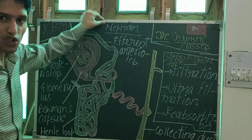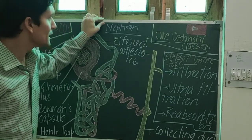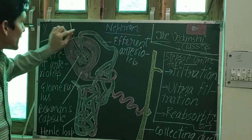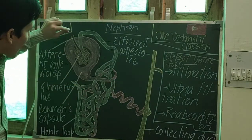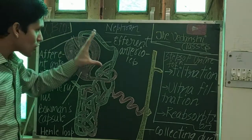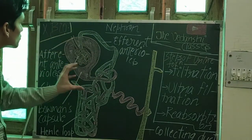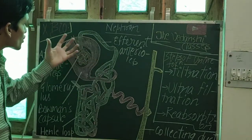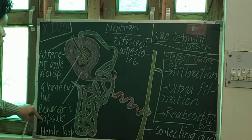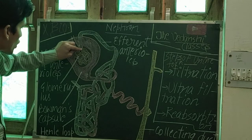Nephron is the structural and functional unit of kidney or excretion. Each nephron is a highly coiled structure, and if we talk about its structure, there is a hollow capsule-like structure that is the Bowman capsule.